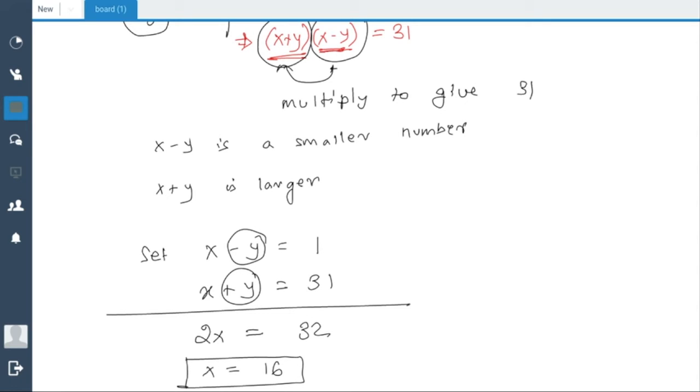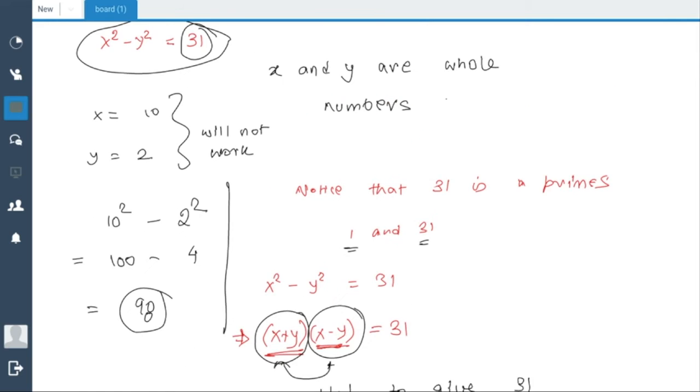Now if we plug in x = 16 in the first equation, so 16 - y = 1, which means 16 - 1 = y, so y = 15. So we have solved the problem. We have found two numbers, 16 and 15, which will work.